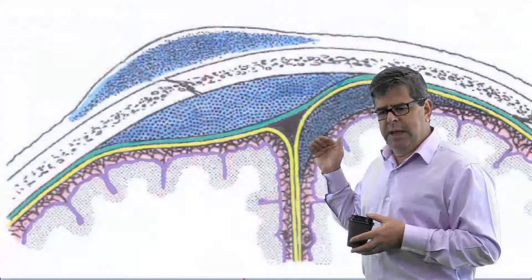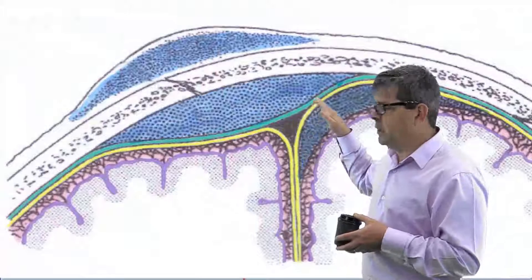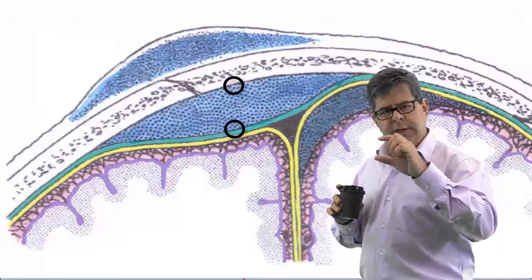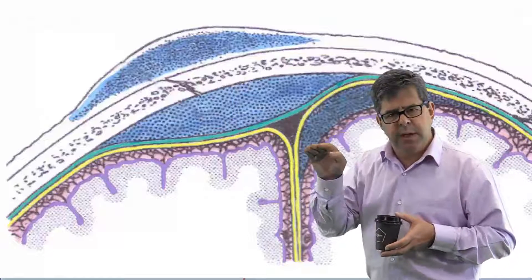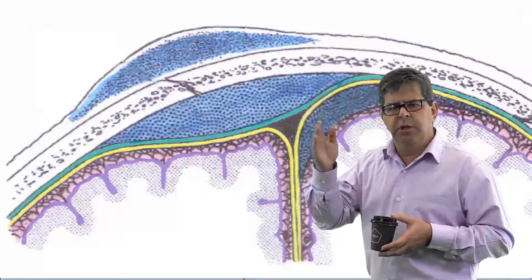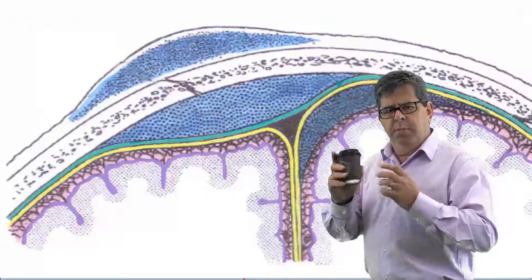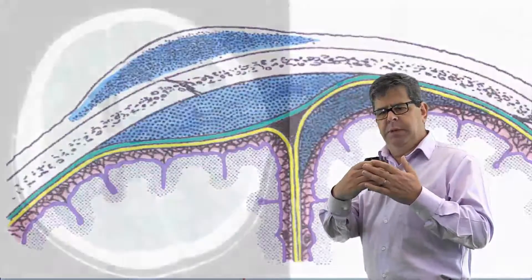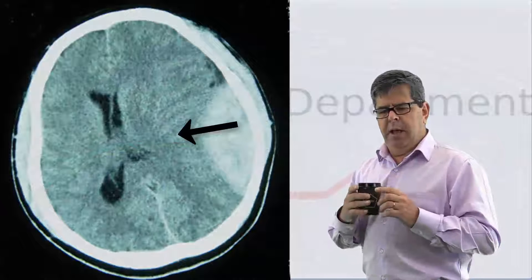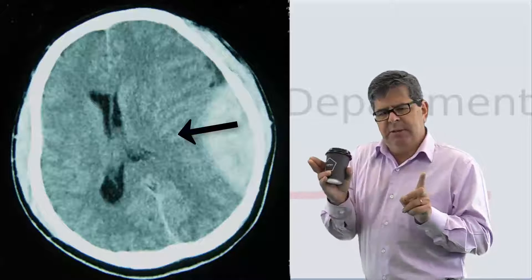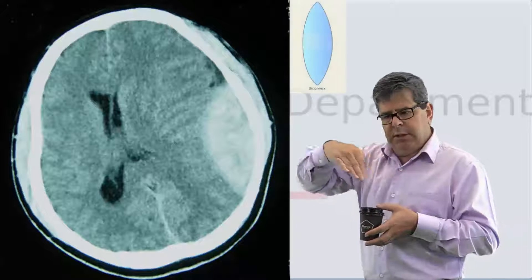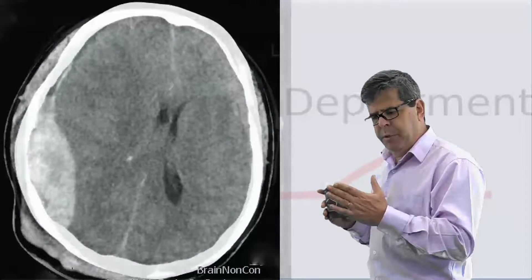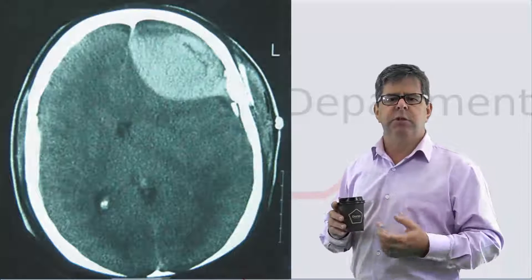Now on to the very important extradural hematomas. Extradural hematomas occur in the extradural space — from the inner surface of the skull to the outer layer of the dura. It's a potential space, but inside it are things like the middle meningeal artery. If you rip those arteries from injuries — say you get smacked with a baseball bat — the artery will bleed and compress the surrounding brain. Because it's under pressure and limited by the cranial sutures, it tends to have that characteristic lens appearance, which we can see on these CTs here. It compresses the surrounding cerebral tissue under high pressure, which is why it's such a neurosurgical emergency.